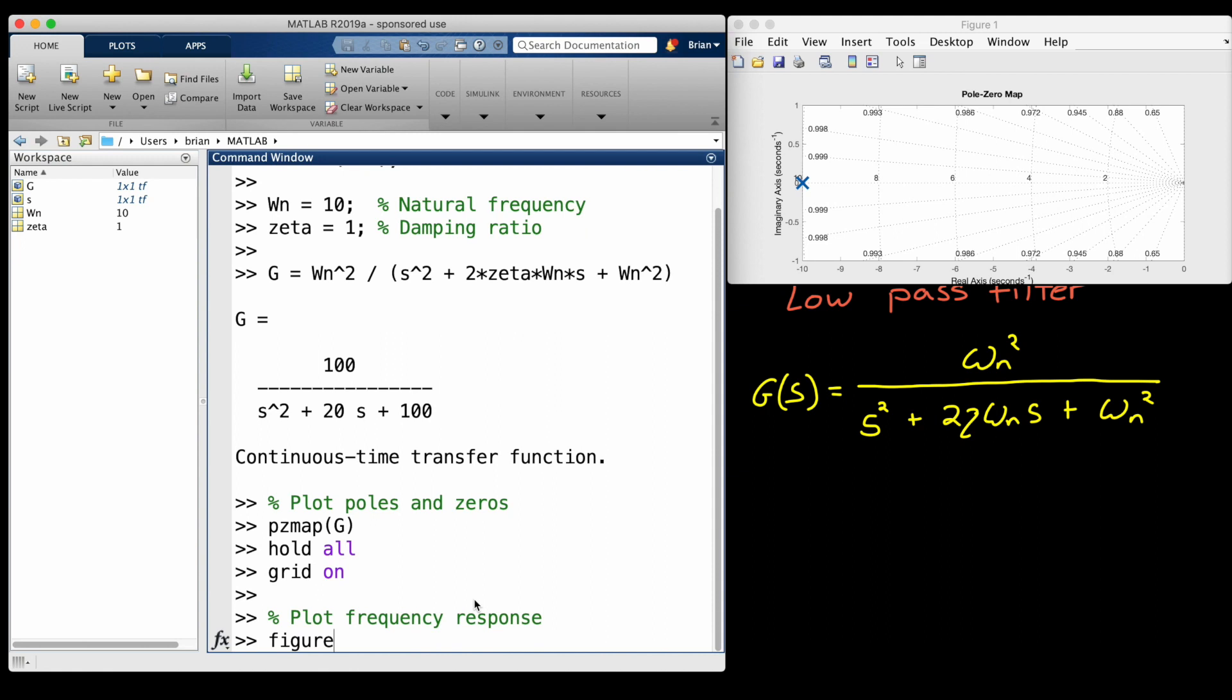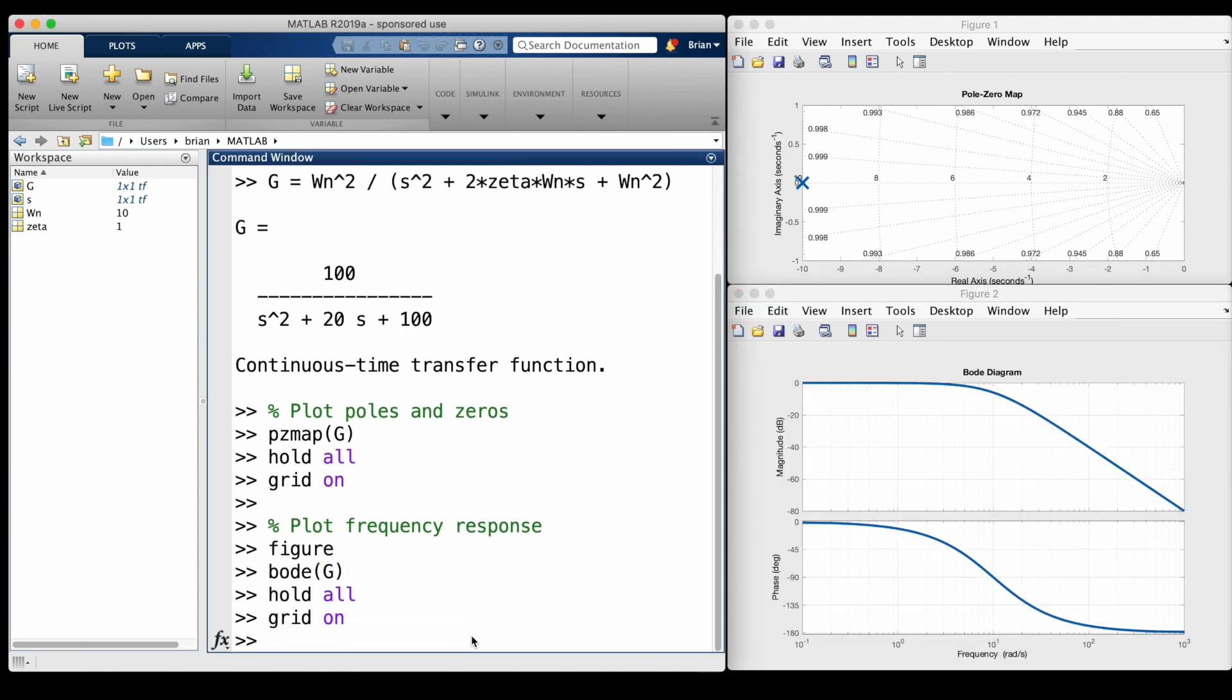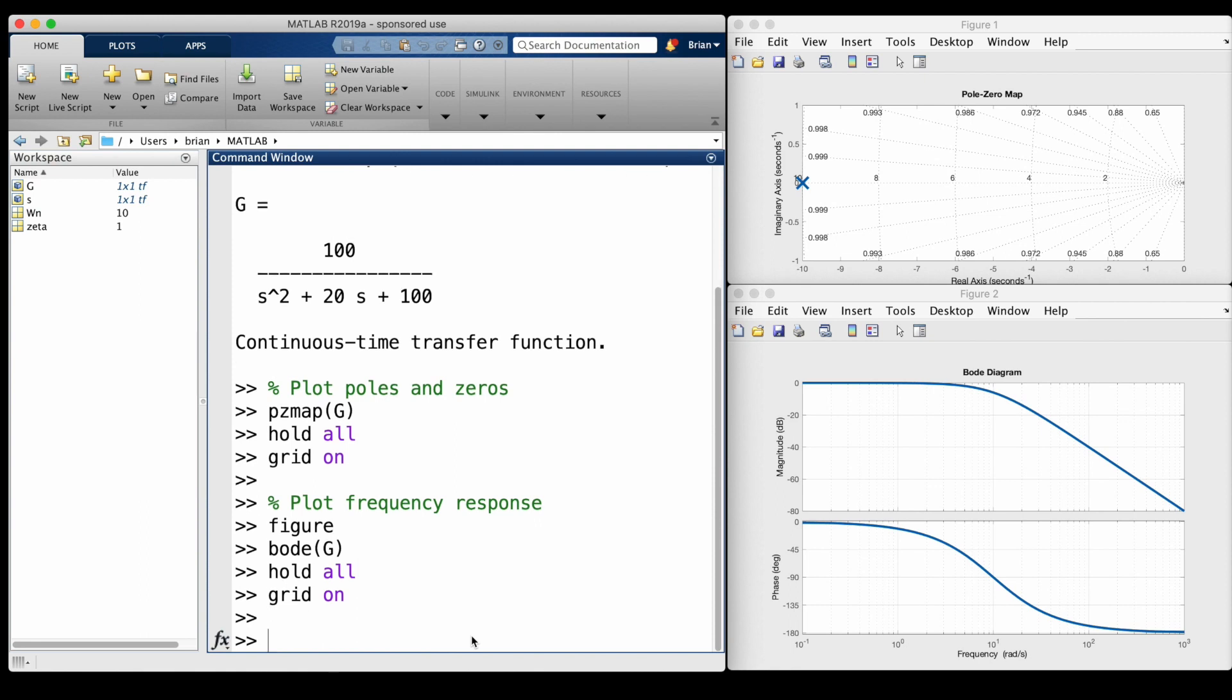The Bode plot for this transfer function is as you might expect if you're familiar with this already. It's a low-pass filter with a cutoff frequency of 10 radians per second, and the gain falls off at minus 40 decibels per decade.